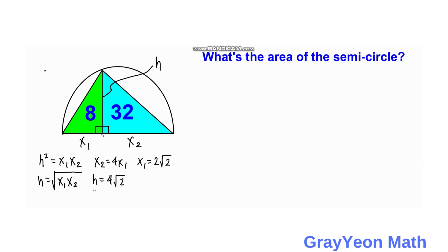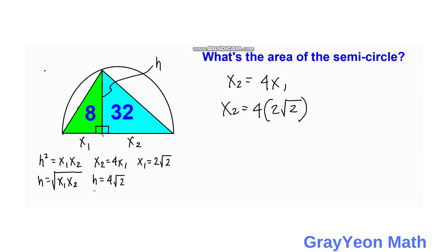Next, we get the value of x2. Since x2 equals 4 times x1, and x1 equals 2 square root of 2, we get x2 equals 4 times 2 square root of 2, so x2 equals 8 square root of 2 units.